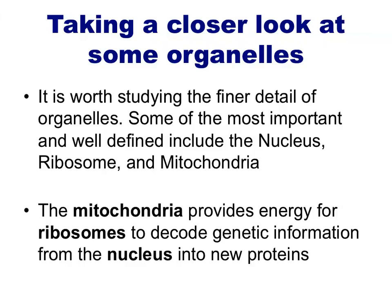Let's take a closer look at a few of these organelles. The three we will focus on are the mitochondria, ribosomes, and nucleus. Remember that the nucleus sends genetic instructions to the ribosome to be processed and translated into protein, and that all of these steps require energy supplied by the mitochondria.